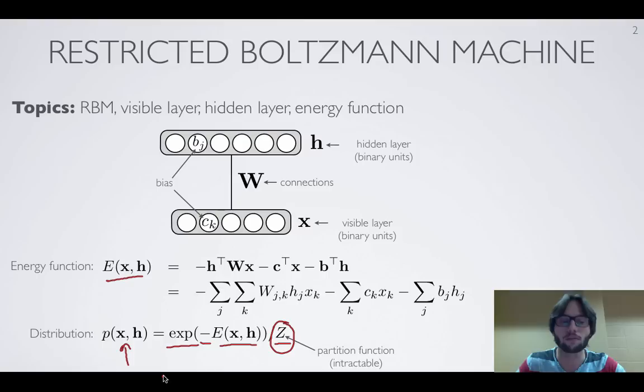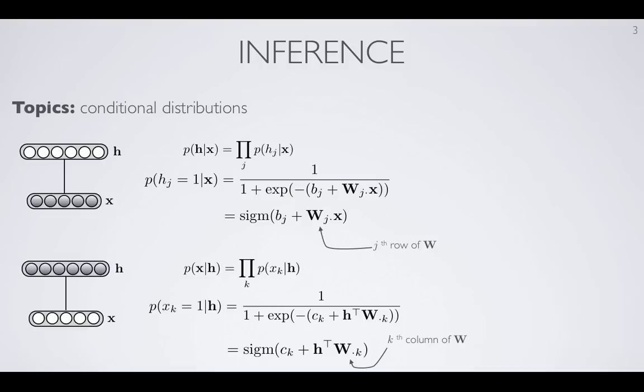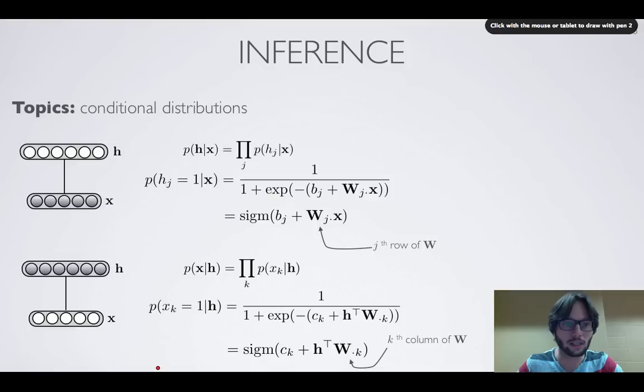However, there are other types of inference that are actually tractable in a restricted Boltzmann machine. One of the most important is conditional inference of either X given a value for the H vector, or H the hidden layer given the visible layer value X. The conditional distribution of either H given X or X given H is actually very simple and easy to compute.